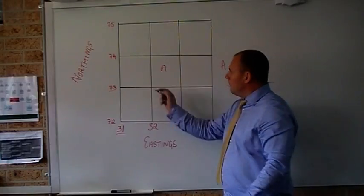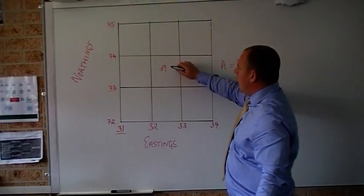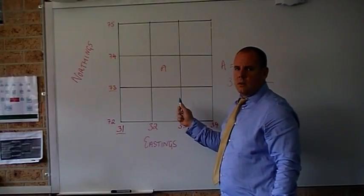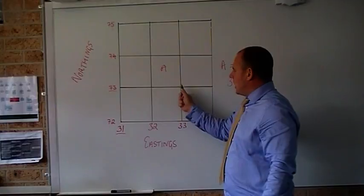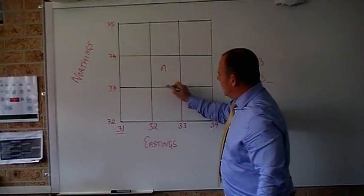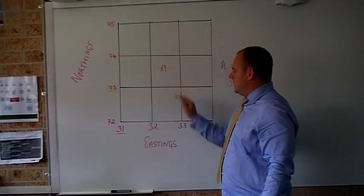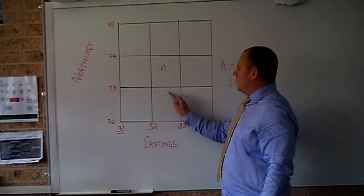How do I do that? Well, I actually split this square where A is into 10 smaller boxes. So I have 10 extra eastings here. That's 5. Anything on the line is 0. So A is here. So it's going to be 32, 5.